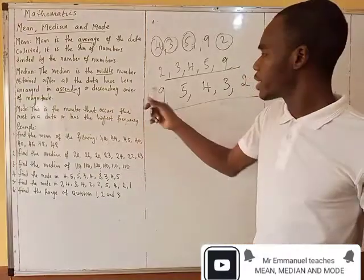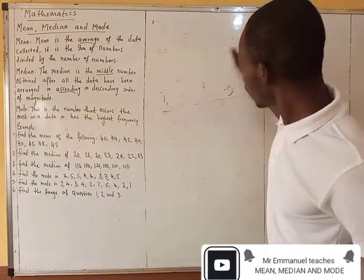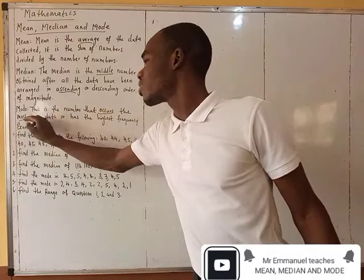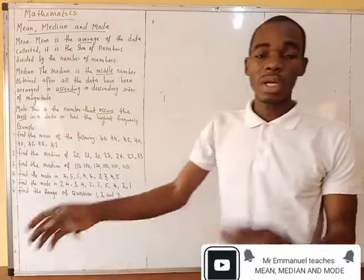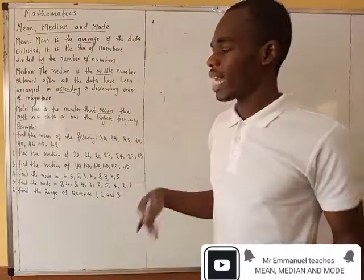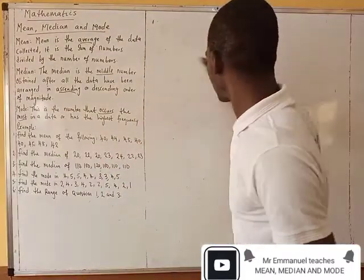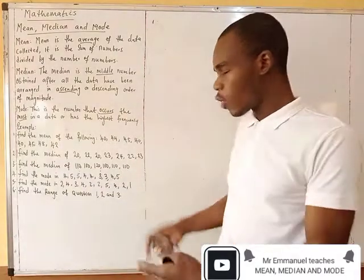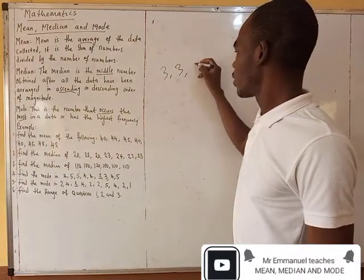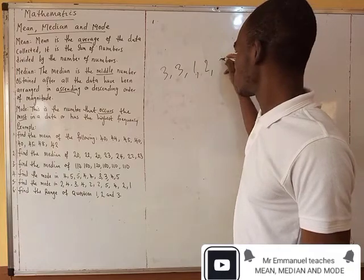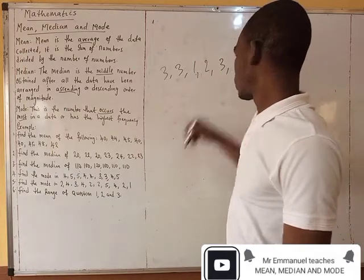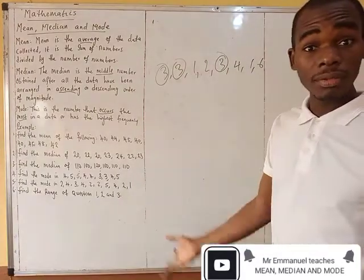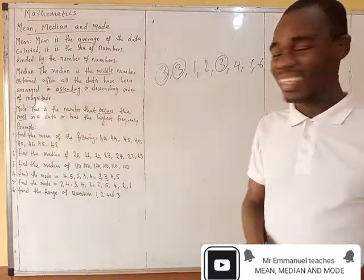Mode is the number that occurs the most. I always call it the one that appears the most — the number that is more plenty. Mode is the number that appears the most. So if I have like three, three, one, two, three, four, one, six — which number appears the most? Three appears one, two, three times. So my mode is three. Straightforward. Mean is average. Median is the middle number. Mode is the number that appears the most.